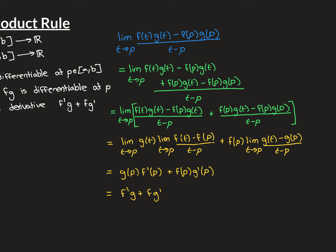So bingo, we're done. This thing equals this thing, which equals this thing, which equals this thing. Written in a slightly neater form, bringing f prime to the front, times g, plus f times g prime — this is exactly the product rule. So this derivative is going to exist and have that value, meaning the function f times g is differentiable at p with derivative equal to f prime g plus f g prime.